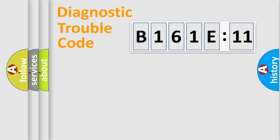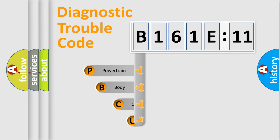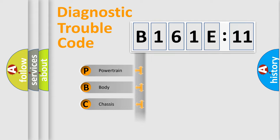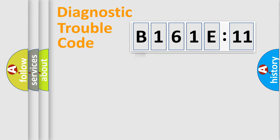Let's look at the history of diagnostic fault code composition according to the OBD2 protocol, which is unified for all automakers since 2000. We divide the electric system of an automobile into four basic units: Powertrain, Body, Chassis, and Network.